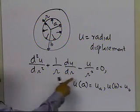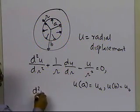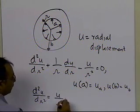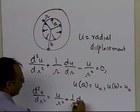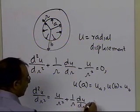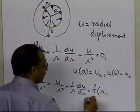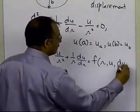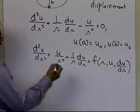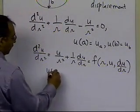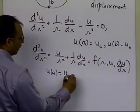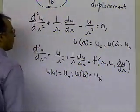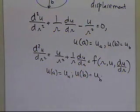But leaving that aside, what you'll have to do is you rewrite this in the form d2u by dr squared is equal to u by r squared plus 1 by r du by dr. And you can see that this is a function of the independent variable r, the function of the dependent variable u, and the function of the first derivative of u, subject to the condition that u sub a is equal to some displacement which is given at a, and the displacement at b is given at u sub b. So that's what's happening there.